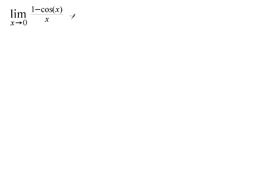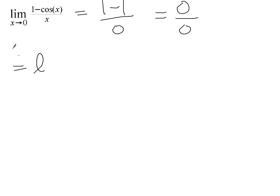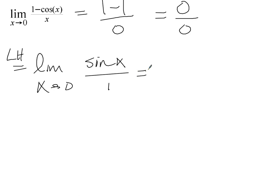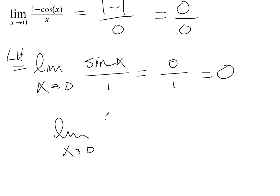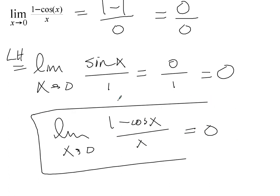This is another one that comes up fairly often. When you plug in 0, you end up with 1 minus 1 over 0, or 0 over 0. Using L'Hôpital's rule, we turn this into the limit as x approaches 0 — the derivative of 1 is 0, derivative of negative cosine is positive sine — so sine x over 1, which is sine of 0 over 1, which is 0. You'll want to know that the limit as x approaches 0 of (1 minus cos x)/x equals 0. Another good one to have memorized.